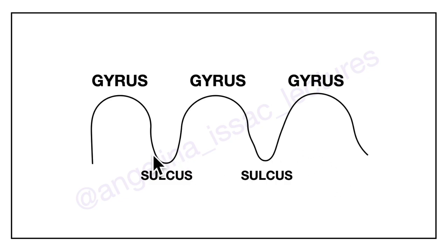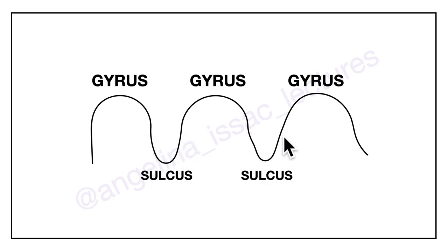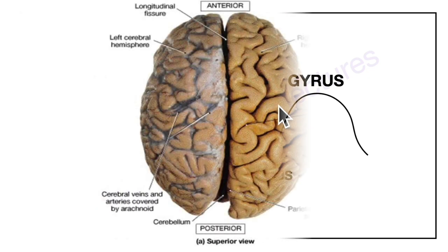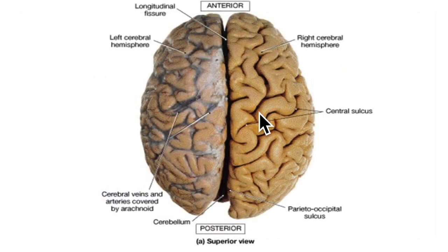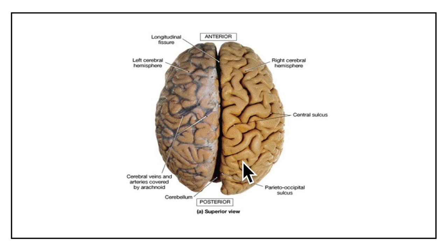Next we will be learning about the cerebral sulci and gyri. The cerebral cortex — the outer part of the cerebrum — is folded into gyri, which are the projections or elevated ridges. A single gyri is known as a gyrus. These gyri are separated from each other by sulci, or depressions. A single sulci is known as a sulcus. This pattern increases the surface area of the cortex. The formation of sulci in intrauterine life begins from the 5th to 6th month and ends almost at the end of the 9th month.